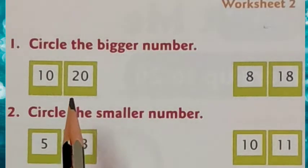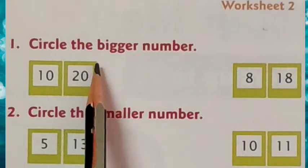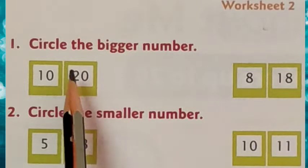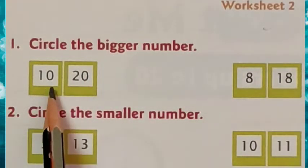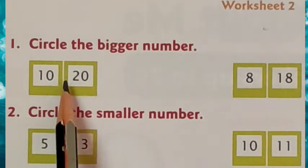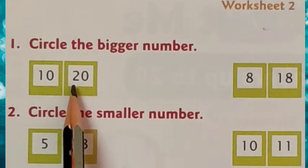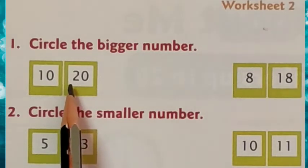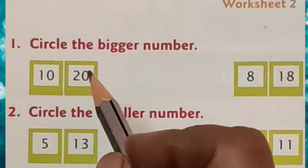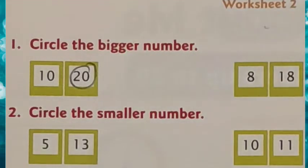Now let us start with the first question. The first heading is: circle the bigger number. Here they have given two numbers, that is 10 and 20. You have to circle the bigger number. Out of these two numbers, 10 and 20, which one is bigger? It is 20. So circle 20.